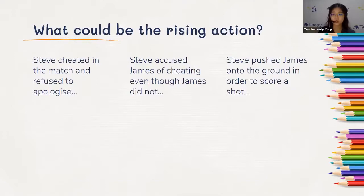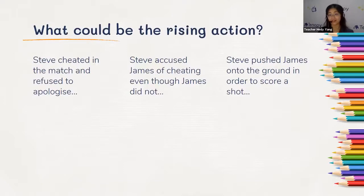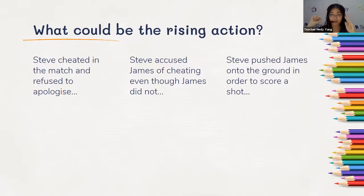Another example: maybe Steve pushed James on the ground in order to score a shot — he risked injuring his friend just to score a goal, and James has all the reasons to be mad. Or maybe James was the one who cheated, Steve called him out, and James — feeling very ashamed in front of their friends — wanted Steve to stop saying it out loud, leading to a fight. Students also suggested: maybe both of them wanted to play with the ball first and were fighting over who gets it. All are valid rising actions.